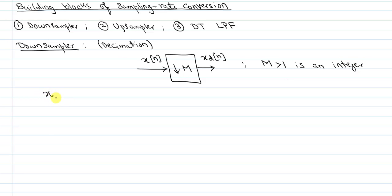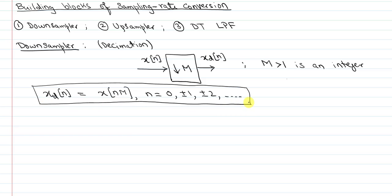So mathematically, what is a down sampler? Well, the output of a down sampler, xdn, is simply xnm, for n from 0, plus minus 1, plus minus 2, and so forth. So if you stare at this equation, you realize that a down sampler is nothing but a device that actually keeps only every mth sample of your original sequence and throws out the rest.